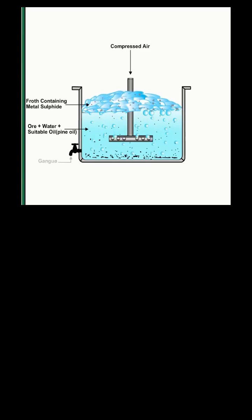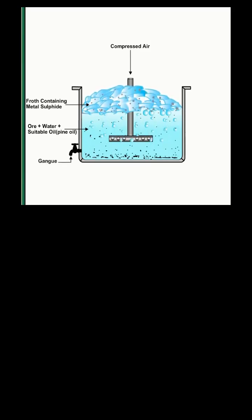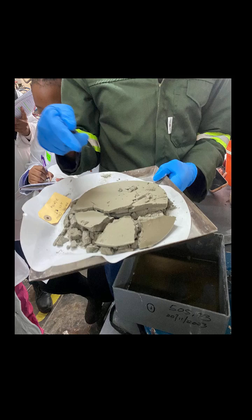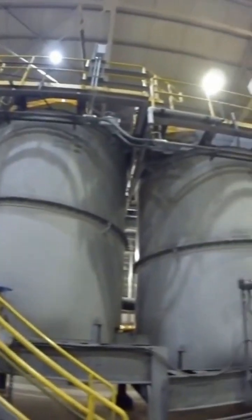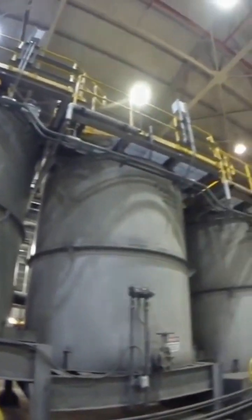The froth containing the floated minerals is skimmed off from the top of the flotation cell, while the remaining pulp, or tailings, is discharged from the bottom. The collected froth concentrate is dried and analyzed to determine the grade and recovery of the target minerals. This information is used to evaluate the efficiency of the flotation process and guide further processing steps.